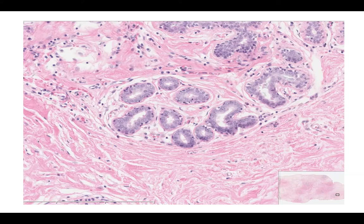The breast has two types of cells in the lobules. We can observe the first one, the luminal epithelial cells, here, as the cuboidal-shaped cells on the inner layer. The other cell type is the myoepithelium, which is the outer layer that rests on the basement membrane. The basement membrane is hard to observe on this slide, but it is the eosinophilic area which separates the ductal system from the adjacent stroma.